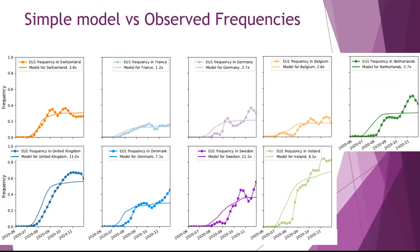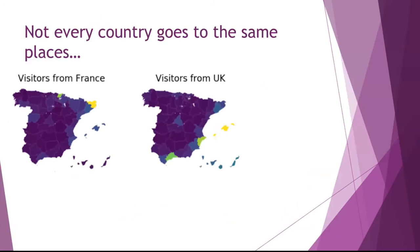We can look at this in more detail by multiplying our simulated data to try to match the real data and seeing the multiplier. For France we actually get this pretty good — our simulated model hits our observed data very well. For Switzerland, Germany, Belgium, and the Netherlands, we're having to multiply somewhere between two to four times to match the model to real data. For other countries we're way off — having to multiply somewhere between seven and eleven times. So why do we have this discrepancy, and why is it so different for different countries? We started to look into some differences.